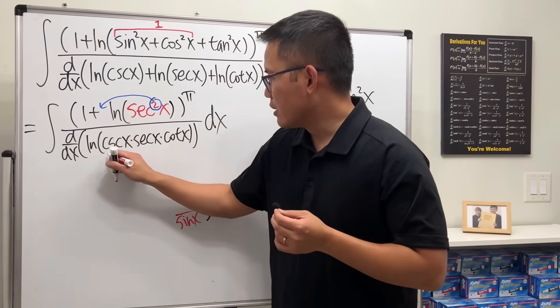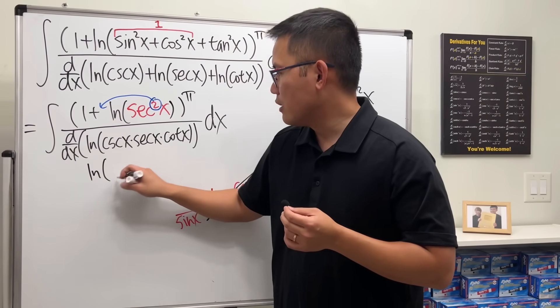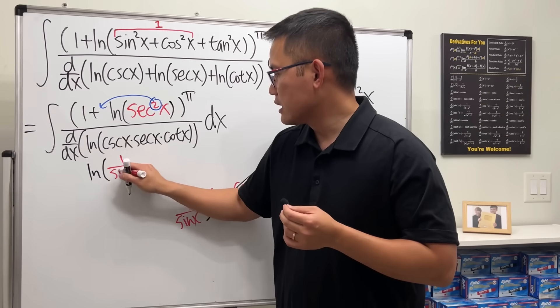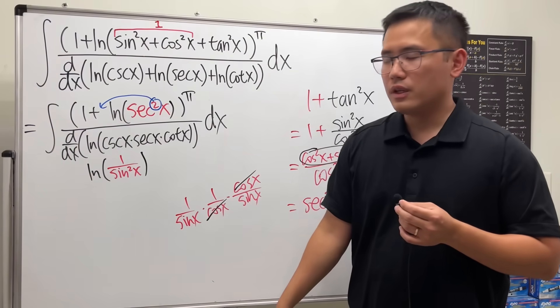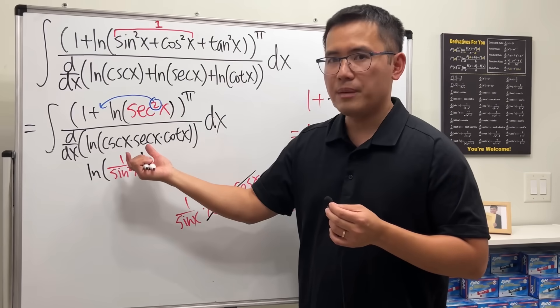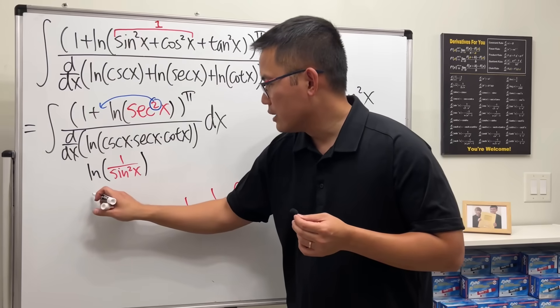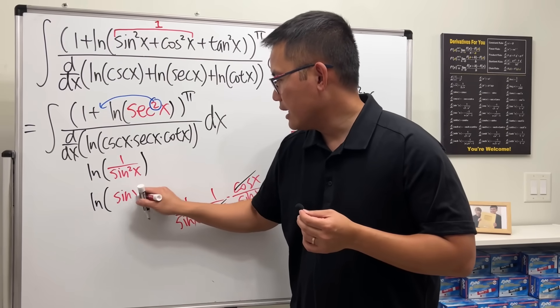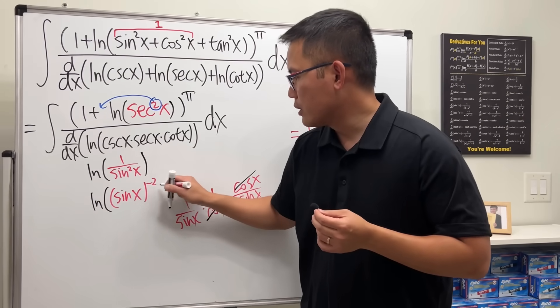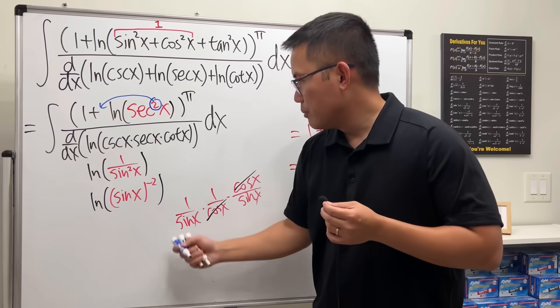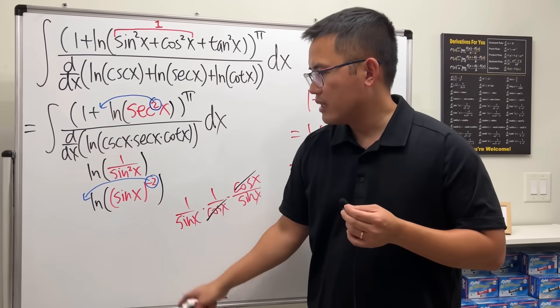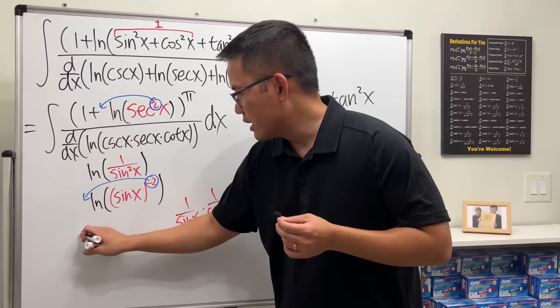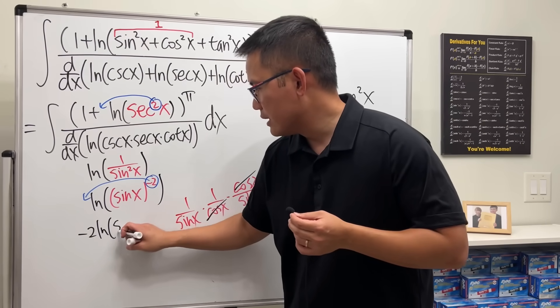So, this right here is the same as ln of 1 over sine squared. And before we take the derivative, we can put this to the top and then write this as negative 2, right? So, ln of sine x raised to the negative 2 power. And then, before we take the derivative, use the natural property, bring that to the front, so we get negative 2 ln of sine x.